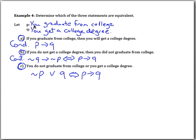Welcome back. You should have let P be 'you graduate from college' and Q be 'you get a college degree.' Statement A translates to P arrow Q — the conditional. Statement B translates to negation Q arrow negation P — the contrapositive, which is equivalent to the conditional. Statement C translates to negation P or Q, which we change into a conditional by negating the first part to get P, changing 'or' to an arrow, and leaving Q as is — so that is also the same as the conditional. All three statements are equivalent.